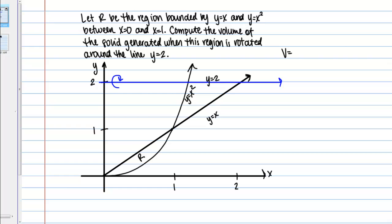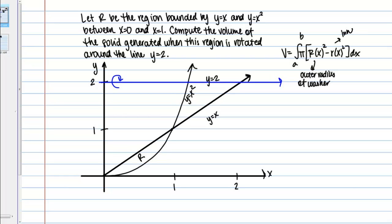The volume is going to be given by an integral — pi times R of x squared minus little r of x squared, dx — where capital R of x represents the outer radius of a washer and little r of x represents the inner radius of a washer. We'll see how to actually compute those radii in just a second.